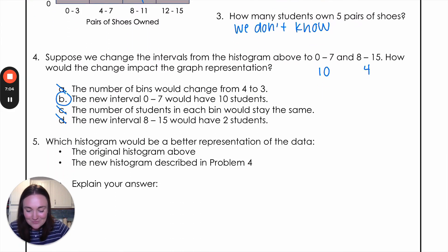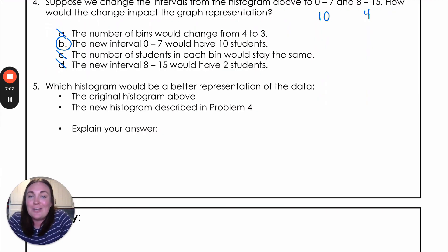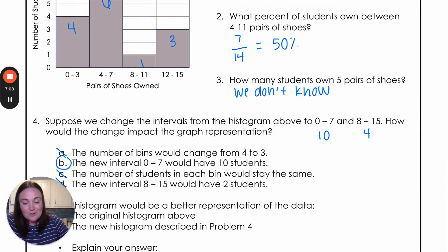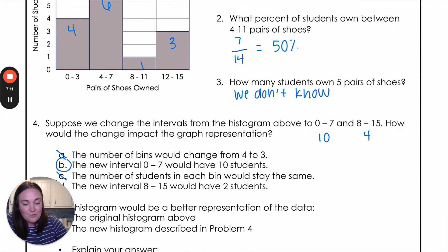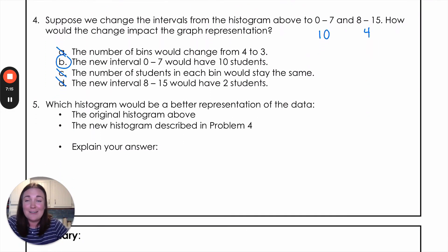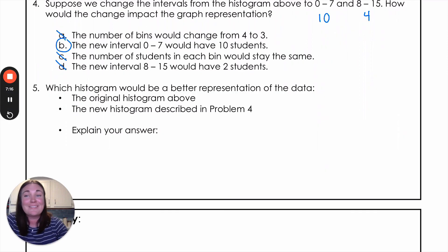All right, last question for this video. Which histogram would be a better representation of the data? So this original histogram that we have up here or that new one with just those two bins? So pause the video here, see what you think. All right, and hopefully we said that the original histogram is a better representation. So when we're looking at that original histogram, we have a better idea of all those different categories. When we shrink it down to just two bins, we can't really see the overall pattern that's going on in the data.